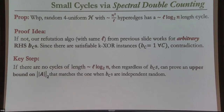If you buy the previous argument, now I want to tell you how to use it to prove Feige's conjecture. I want to relate the spectral calculation to the existence of even covers — cycles — in hypergraphs. Because I did the spectral calculation only for random 4XOR, this won't yet be the full proof of Feige's conjecture; it will prove that random 4-uniform hypergraphs of appropriate density must have an appropriate length cycle.